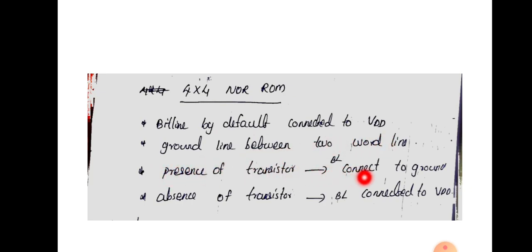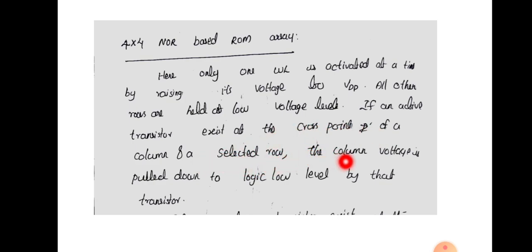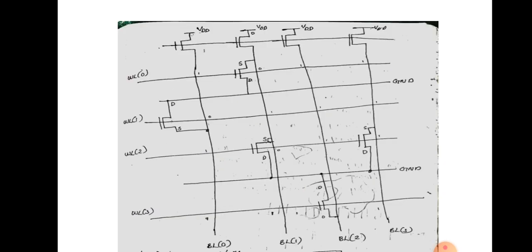The presence of transistor means bit line is connected to ground and absence of transistor means bit line is connected to VDD. Here, only one word line is activated at a time by raising its voltage to VDD; all other rows are held at low voltage levels. And if an active transistor exists at the cross point of a column and a selected row, the column voltage is pulled down to logic 0 level by its transistor. We will have an example of this.